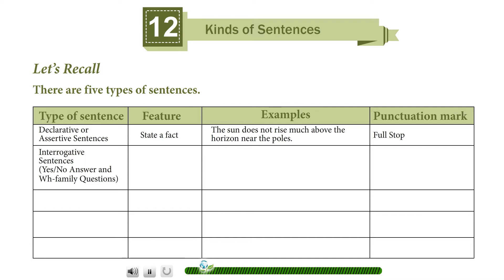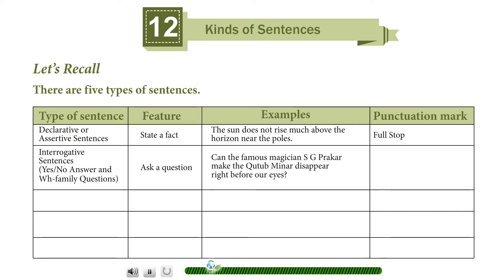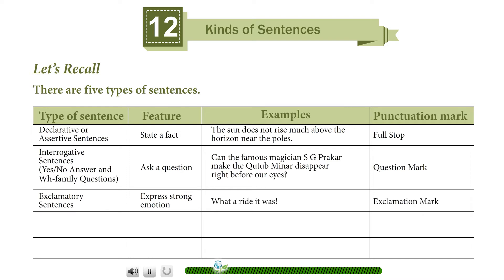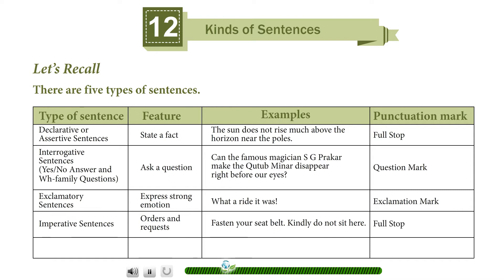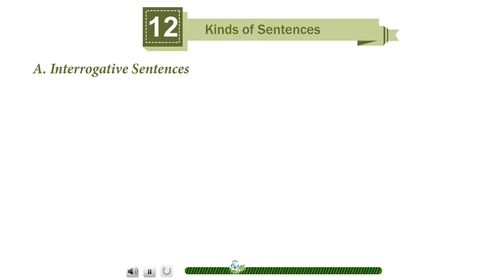Interrogative sentences ask yes/no or wh-family questions. Exclamatory sentences express strong emotion — example: 'What a ride it was!' — punctuated with an exclamation mark. Imperative sentences give orders and requests, such as 'Fasten your seat belt' or 'Kindly do not sit here,' ending with a full stop. Optative sentences express prayers and wishes, such as 'May the Almighty bless you,' ending with an exclamation mark.